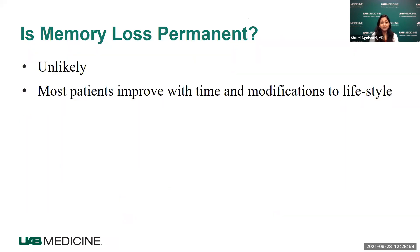Another question often asked is: is this permanent? Is this how I will be forever? I have this brain fog and find it very hard to function in day-to-day activities. We certainly do not have enough research to say that with certainty. But with what we know and have seen so far, we feel it is unlikely that this is going to be permanent. We have certainly seen patients who improve with time and with other measures. From a biologic or mechanistic perspective, there is not much to suggest this will progress to dementia. Most patients tend to improve with time and with lifestyle modifications.